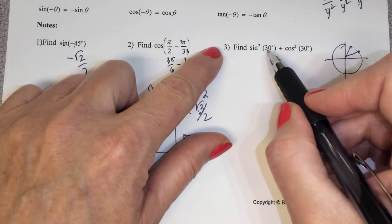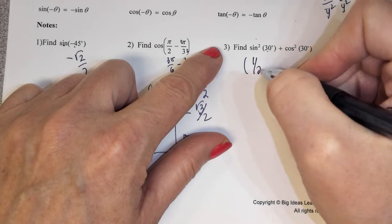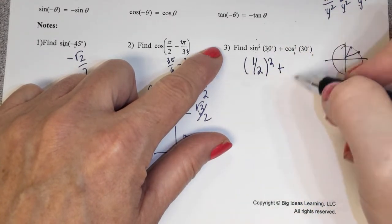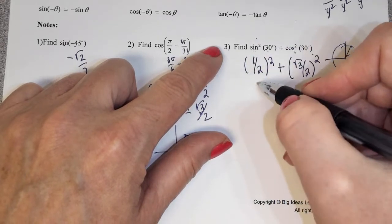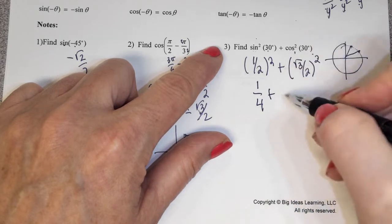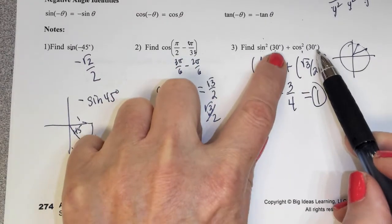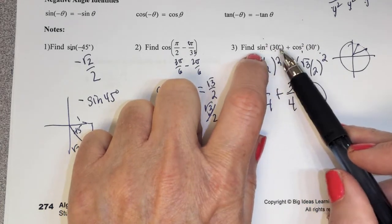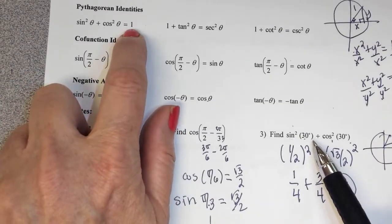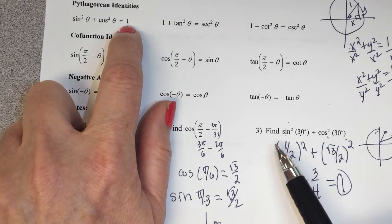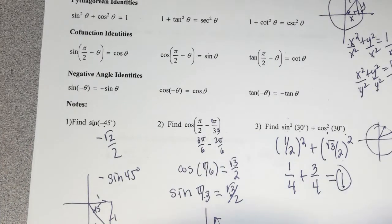To do sin²(30) + cos²(30): sine of 30 is 1/2, and we square it to get 1/4. Cosine of 30 is radical 3 over 2, squared gives 3/4. Notice this is sine squared theta plus cosine squared theta with the same angle — that's our Pythagorean identity, so it equals 1. If you're taking the ACT and you know this identity, you'd automatically know the answer is 1 without computing each step. These identities save you time.